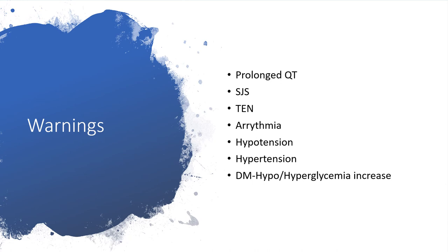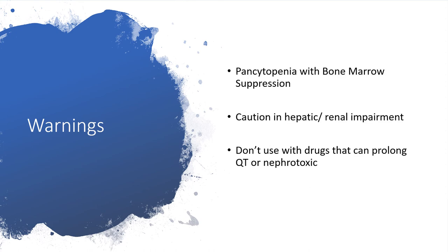Further warnings include arrhythmia and hypotension, as explained. In diabetes mellitus, the individual could be faced with either hypoglycemia or hyperglycemia. Pancytopenia can occur when the bone marrow is suppressed. We should be cautious in the face of hepatitis or renal impairment. Do not use pentamidine with other medications that can prolong QT or any medication that has nephrotoxicity as a side effect.